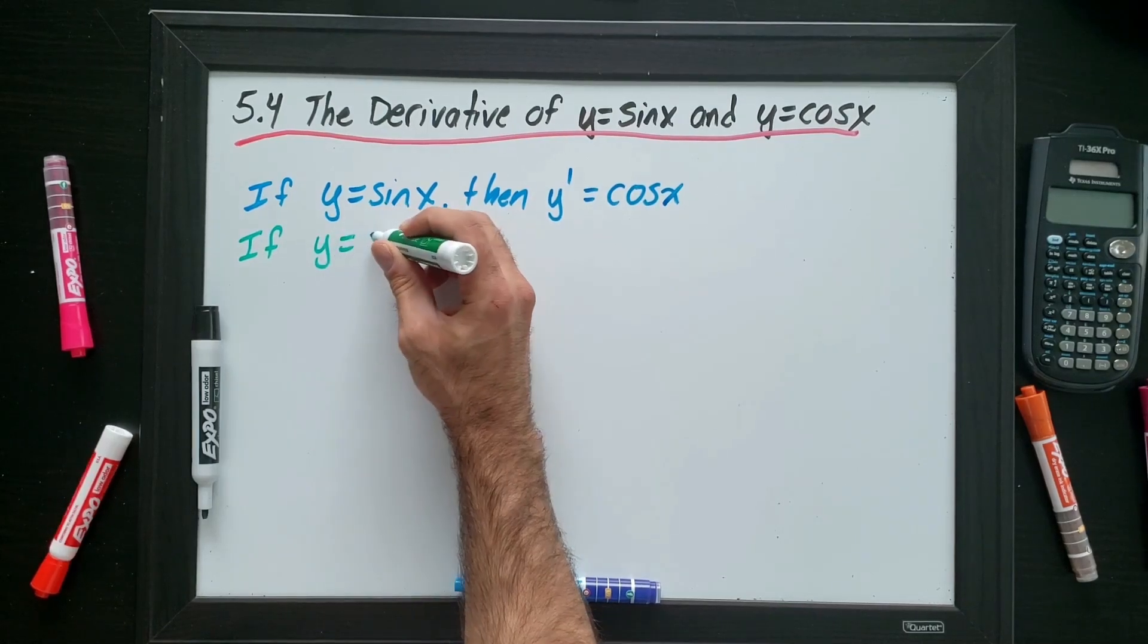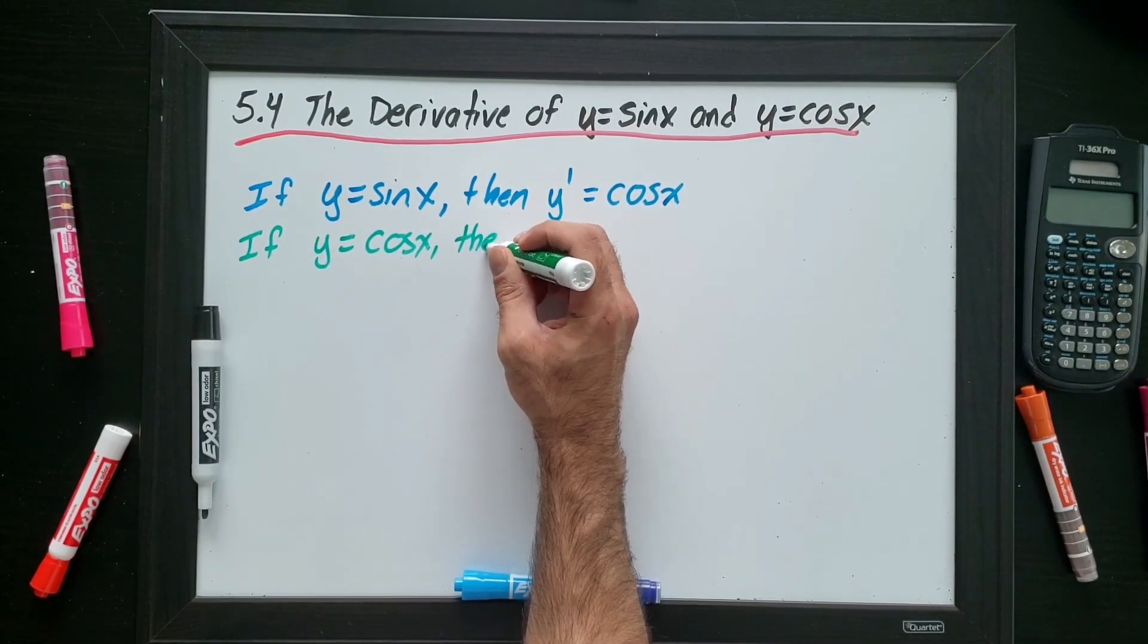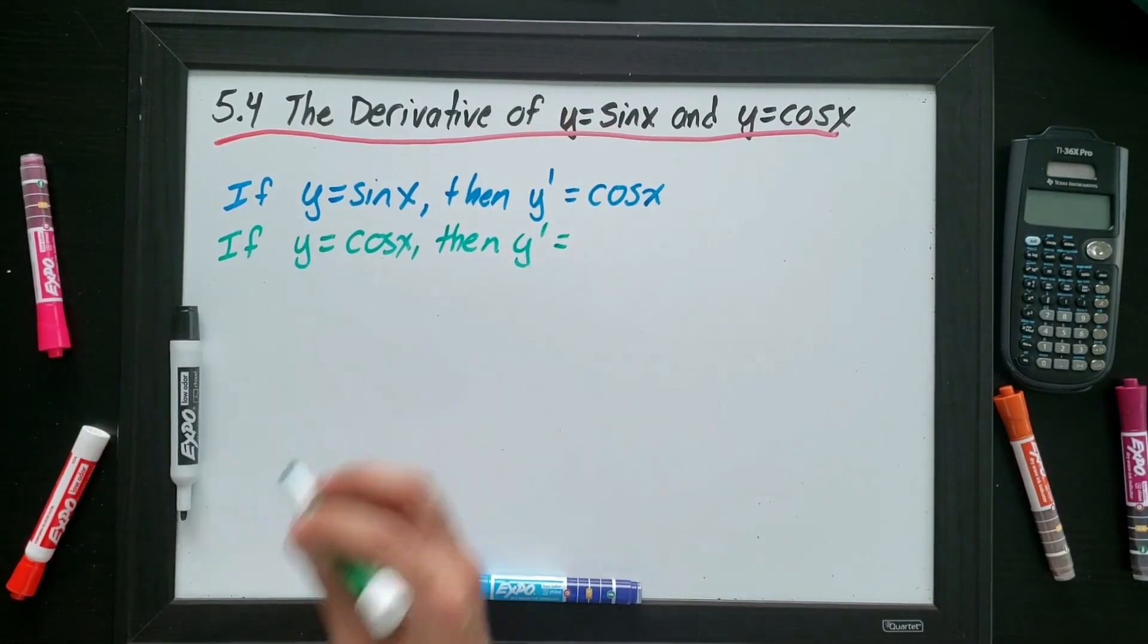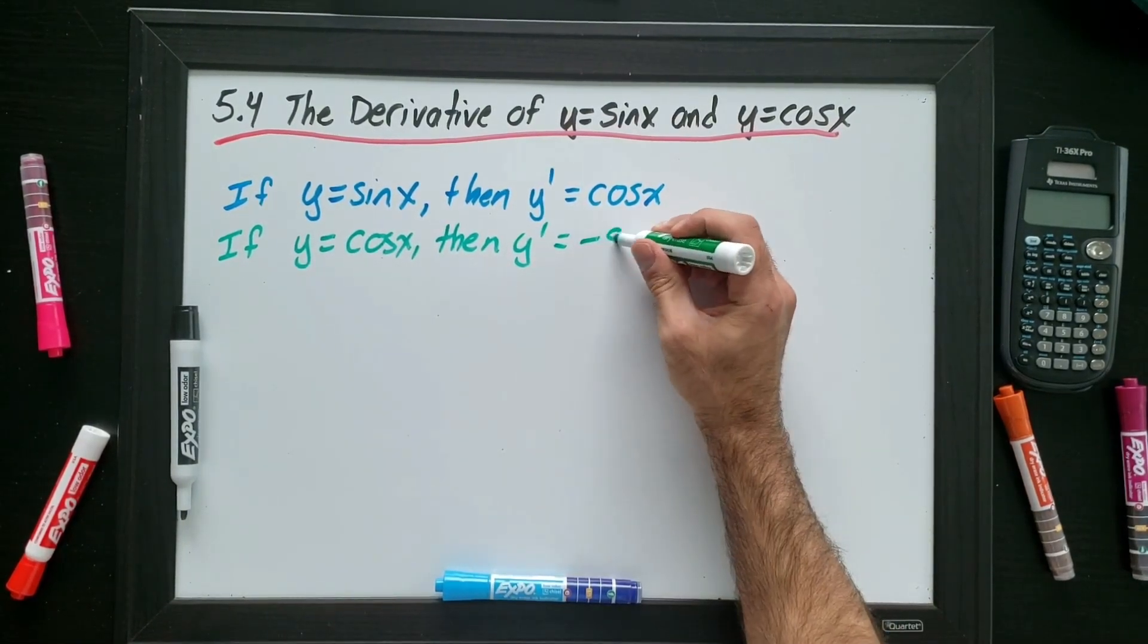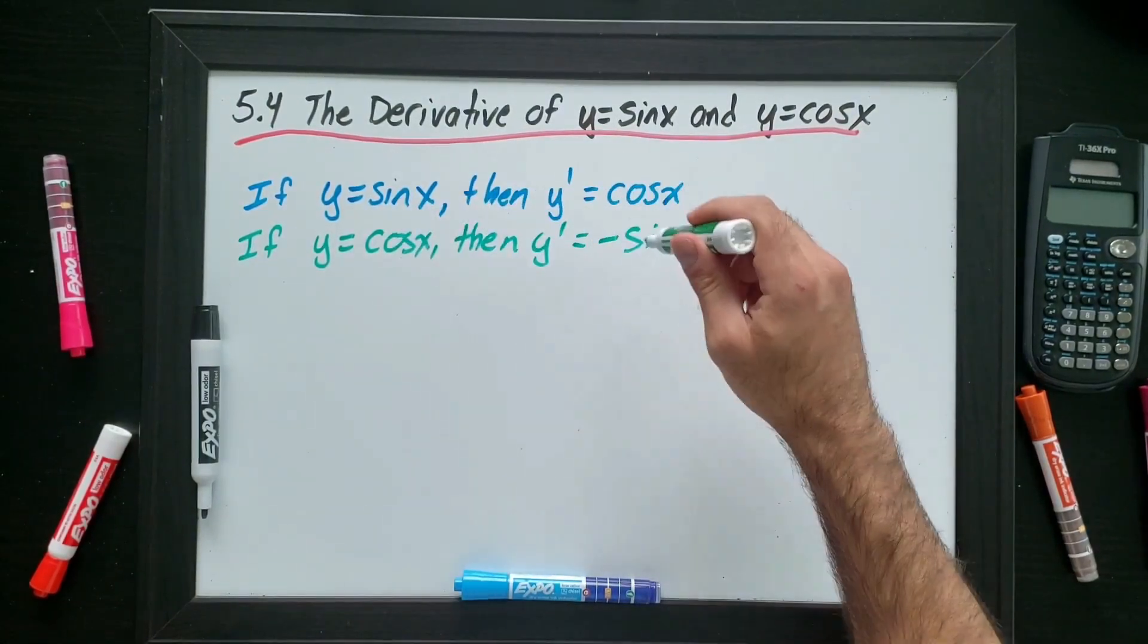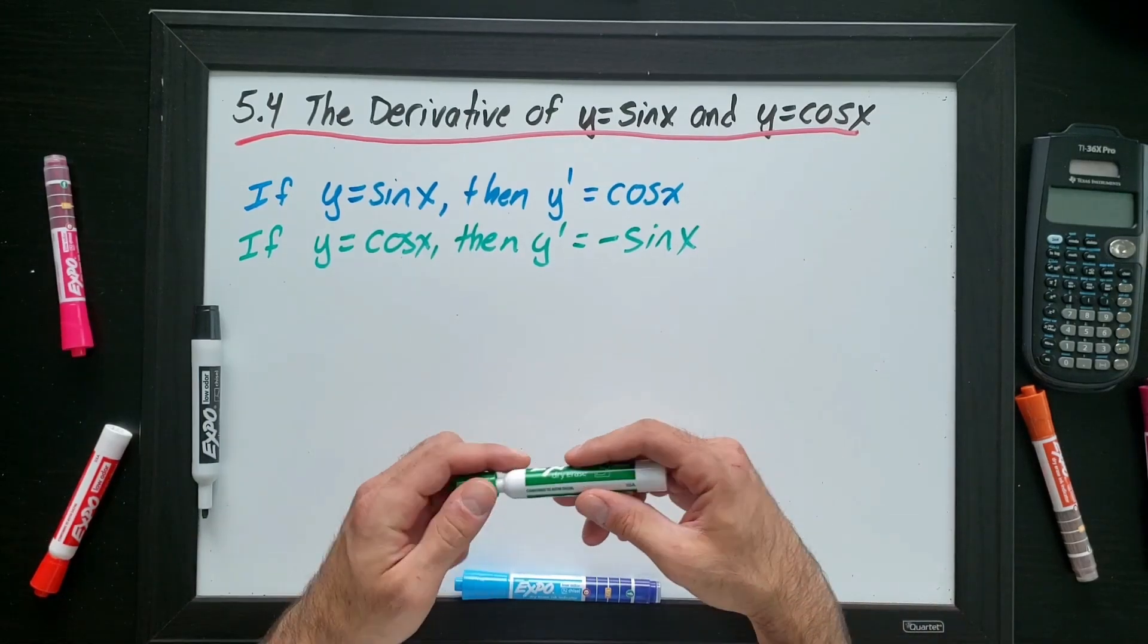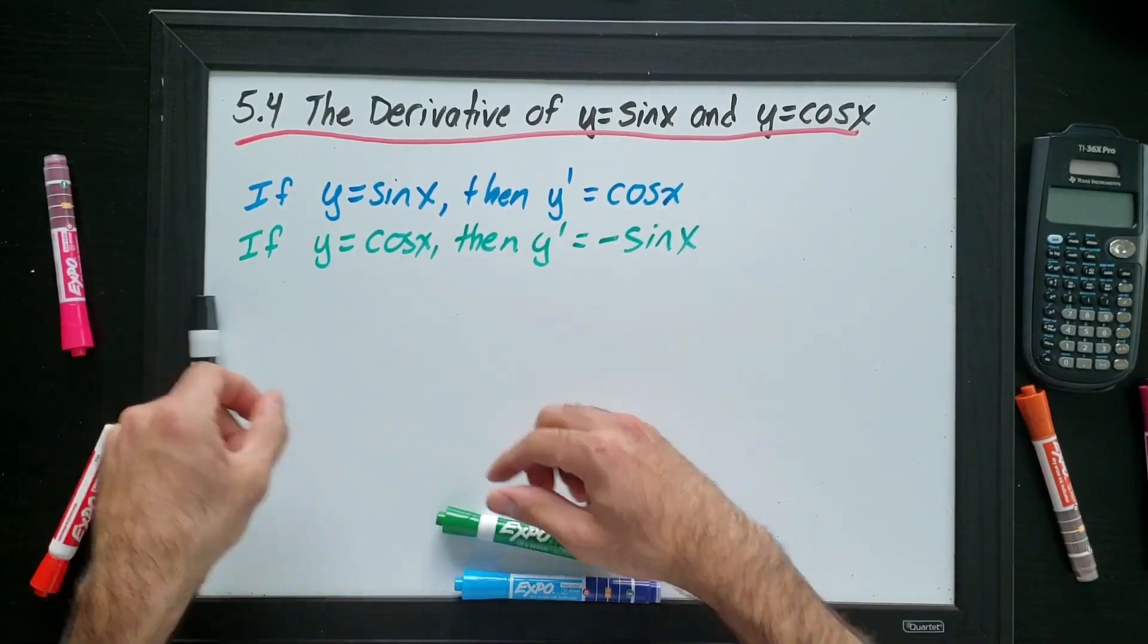If y equals cos x, then y prime equals negative sine x. Okay, so be careful with that negative. When you're going from cos to sine, we add that negative. When we go from sine to cos, we do not. Okay, so let's go right into some examples.